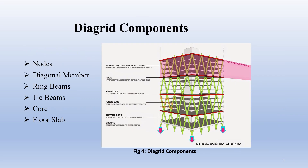Let's see the diagrid components. The following are the diagrid components: nodes, diagonal members, ring beams, tie beams, core, and floor slab.